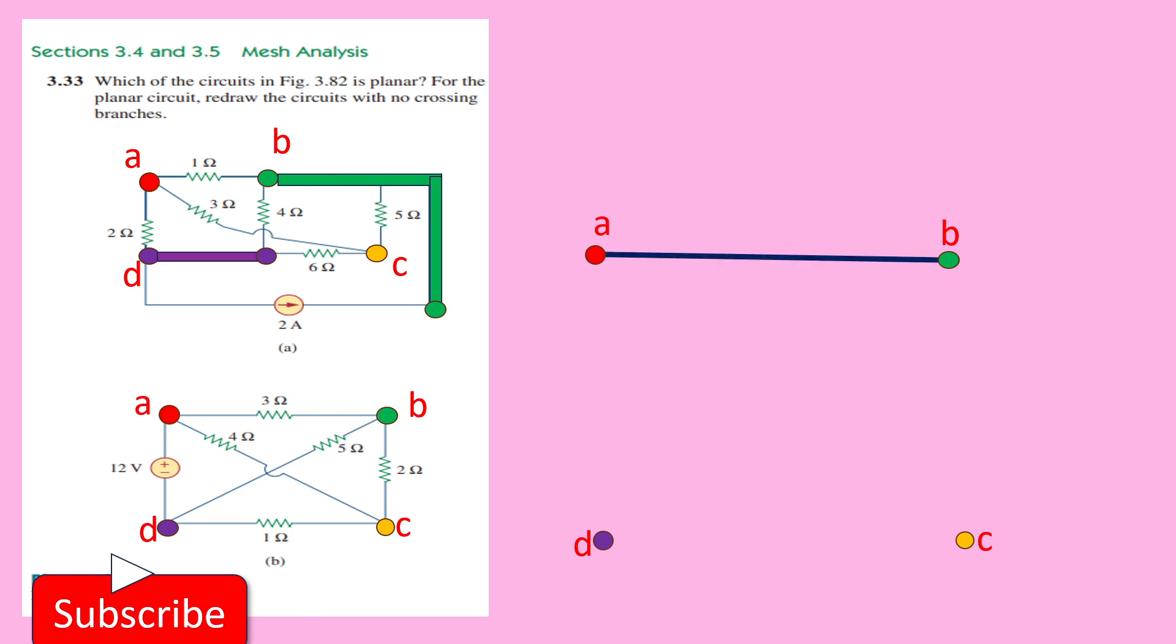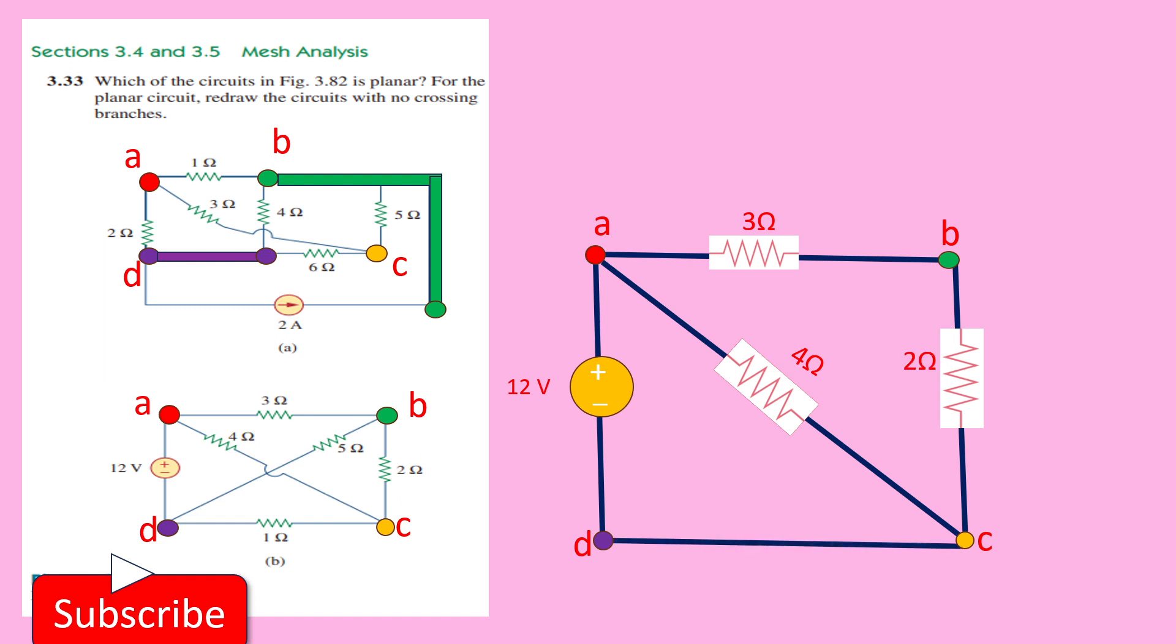Between A and B, we have this 3 ohm resistance. Between A and C, we have this 4 ohm resistance. Between this A and D, we have this 12 volt voltage source. And between this B and C, we have this 2 ohm resistance. Between this D and C, we have 1 ohm resistance. And between this B and D, we have 5 ohm resistance, which is actually redrawn.